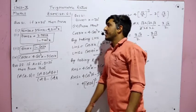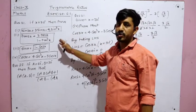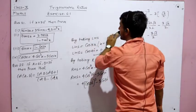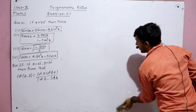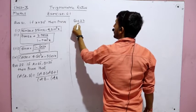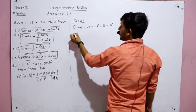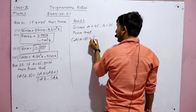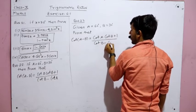We have completed all four parts of question number 21. These are all important formulas of trigonometry — try to remember all of them. Now for question number 22: given A = 60° and B = 30°, we have to prove that cot(A − B) = (cot A · cot B + 1) / (cot B − cot A).